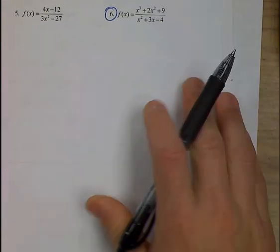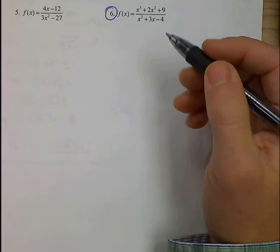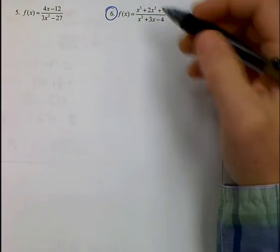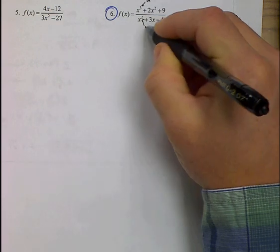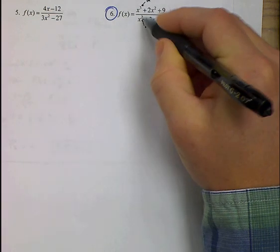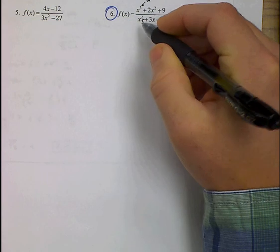All right, number six. We need to start by looking at the horizontal asymptote, so we can see that m up here is bigger than n down here. The degree up here is bigger than the degree down here, so we are going to have an oblique asymptote.